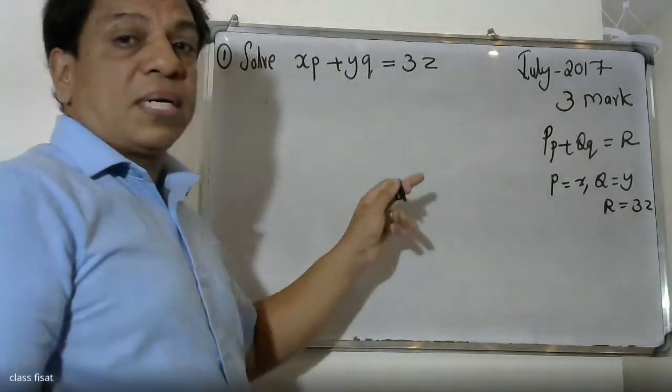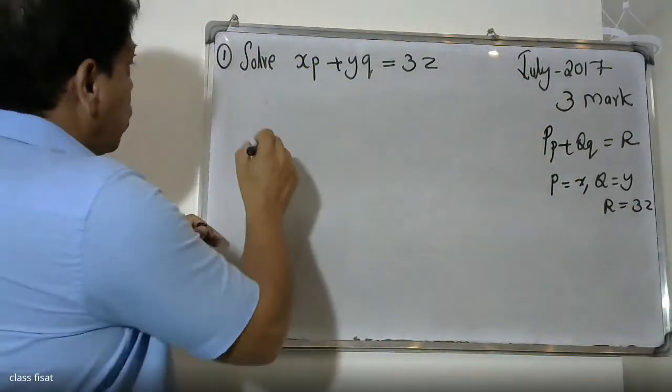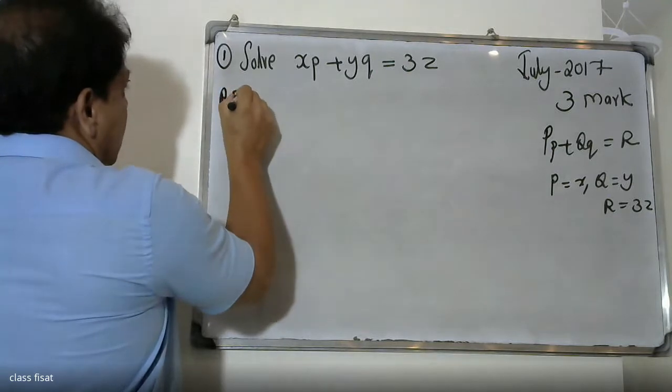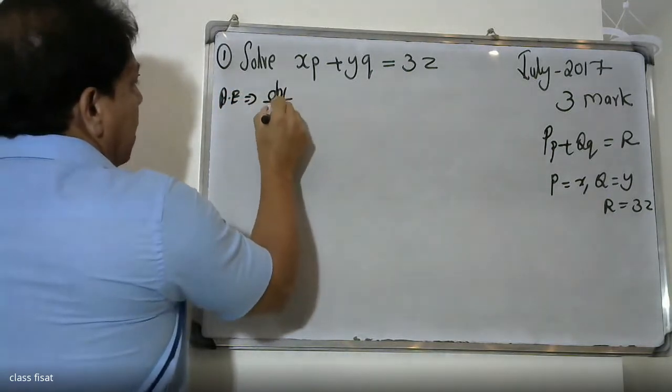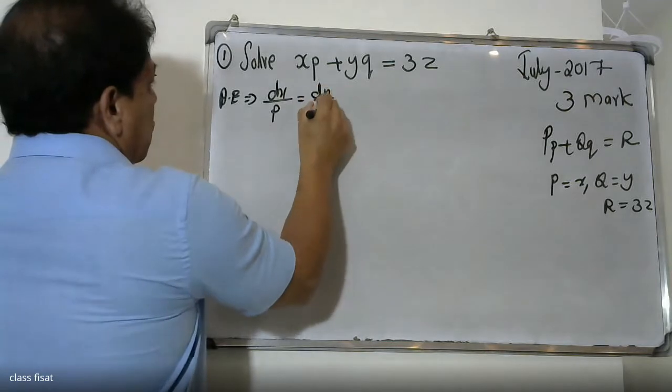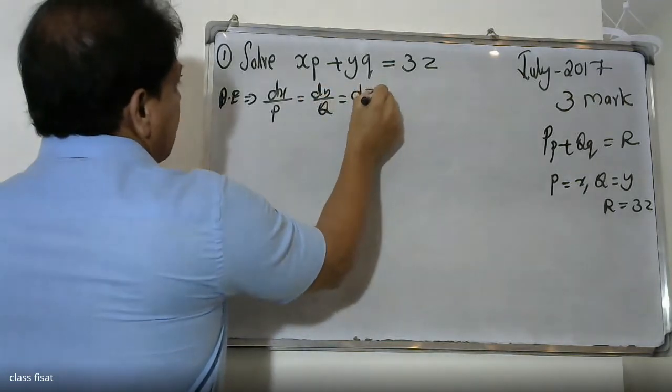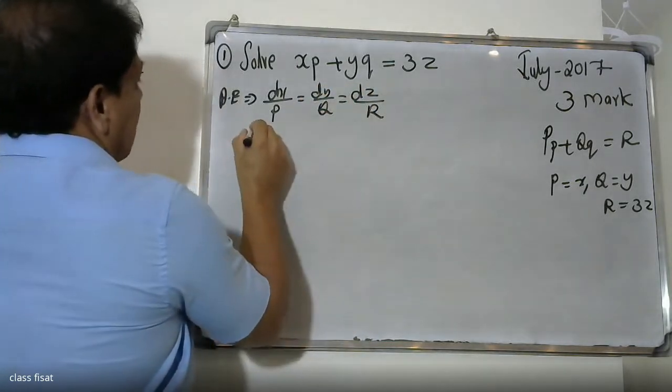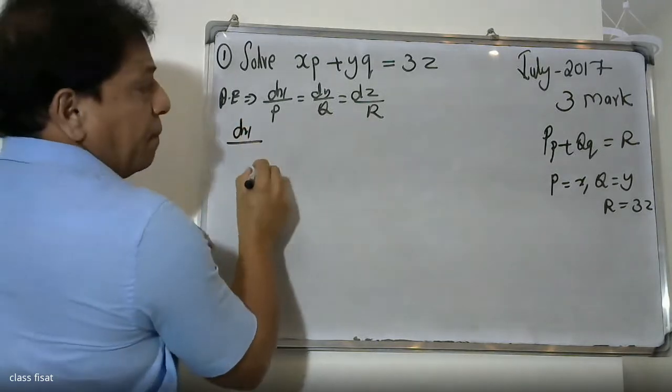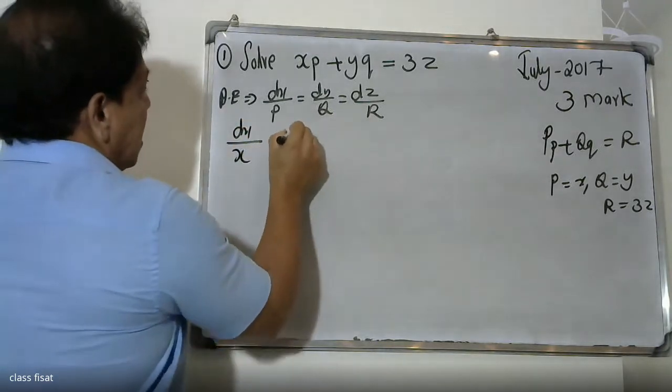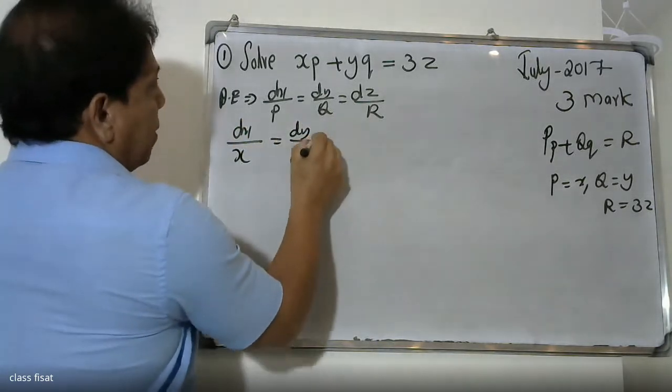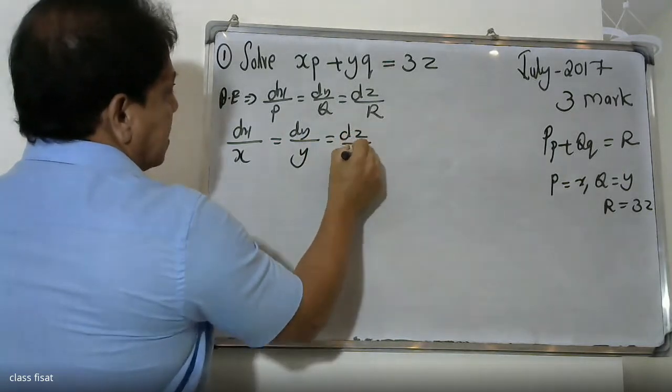This is the solution. First, we write the auxiliary equation. The auxiliary equation is dX by P, dY by Q, dZ by R. dX by X, dY by Y, dZ by 3Z.